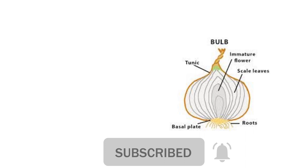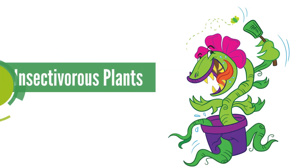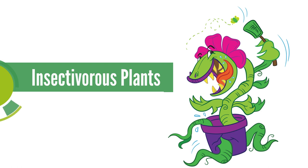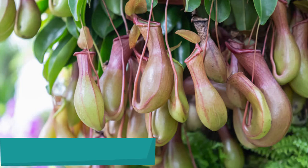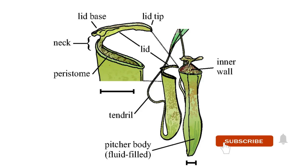Onion is an example of fleshy scales, while ginger is an example of dry scales. Coming to insectivorous plants — the pitcher plant: the leaves of this plant are modified like a pitcher, shaped like a jug with a lid. The tip of the leaf is modified into a lid, and the petiole of the leaf is coiled like a tendril.